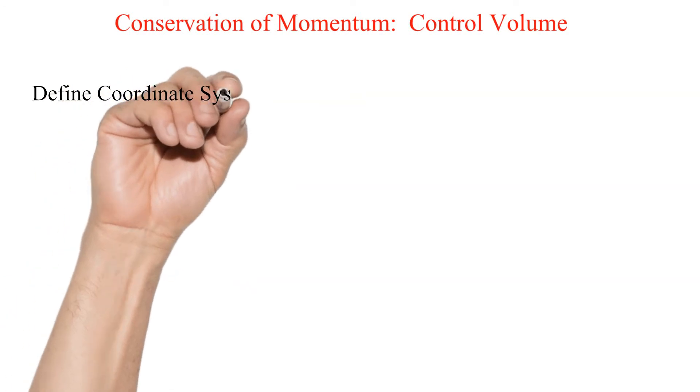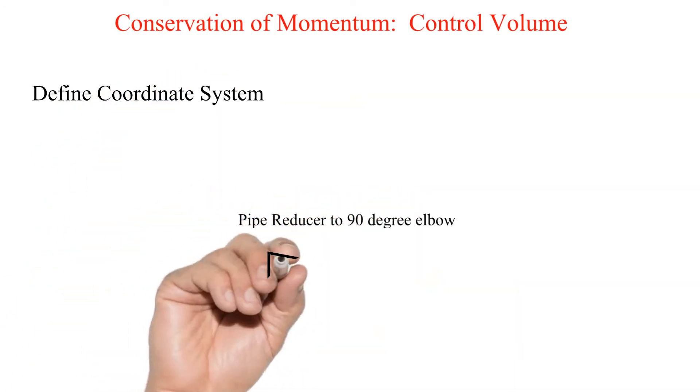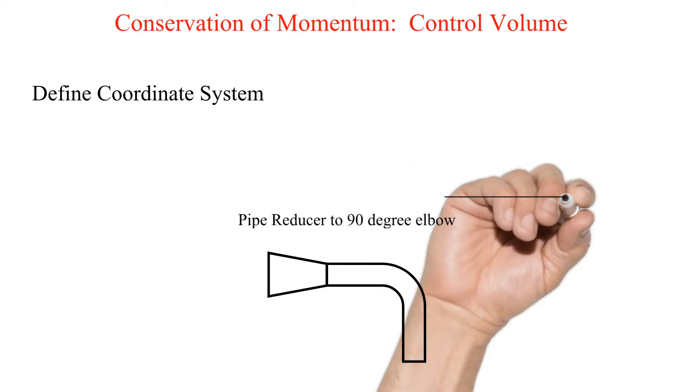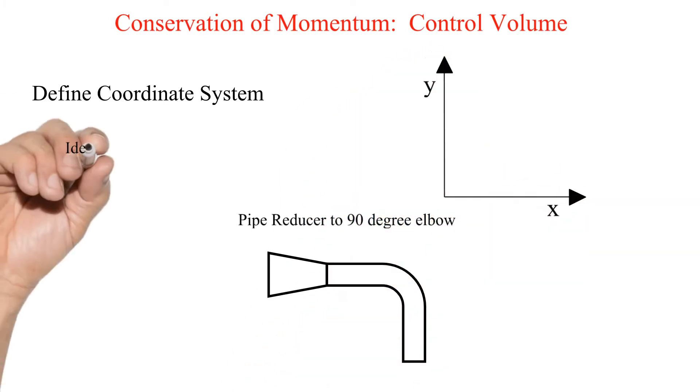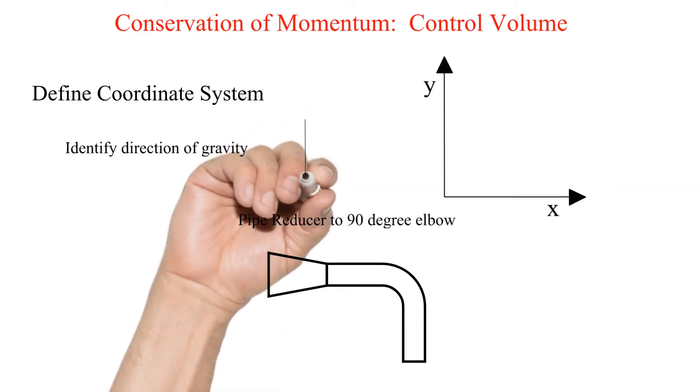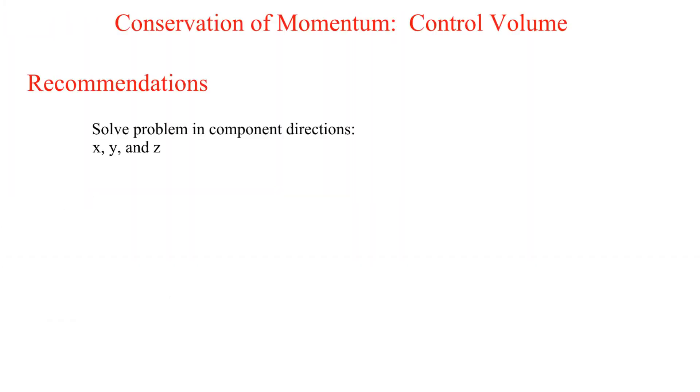Next we should define a coordinate system and define the direction of gravity. Shown is a reducer that is connected to a 90 degree elbow. If we wanted to find the support forces on this section of pipe we will at least need to define an x direction and a y direction. That is our next recommended step.